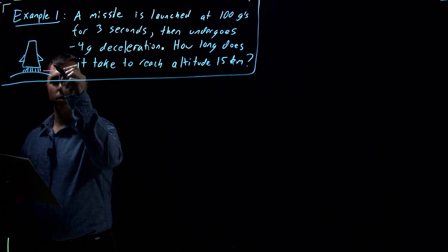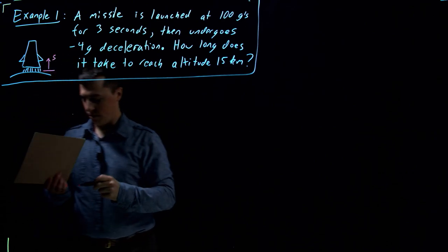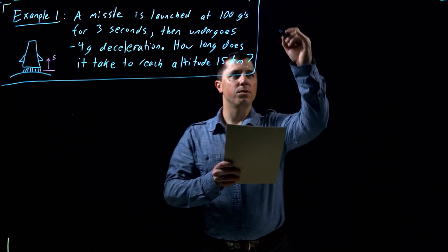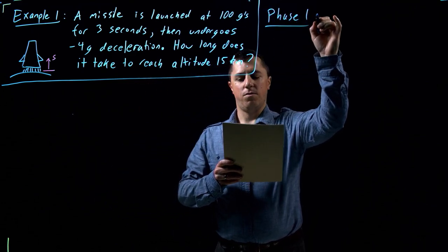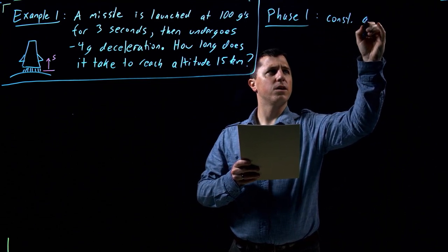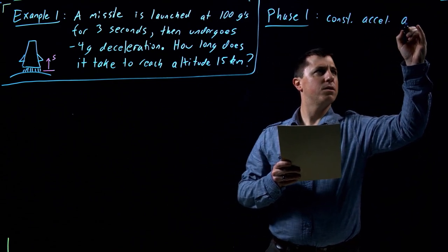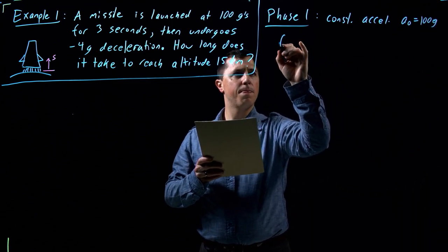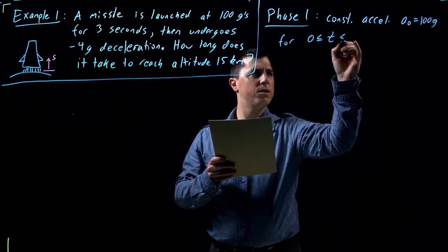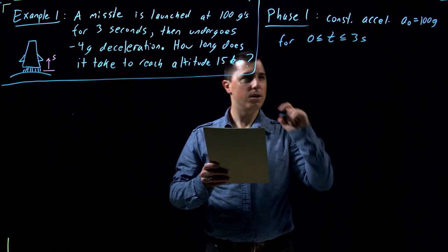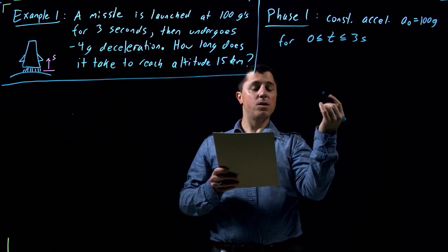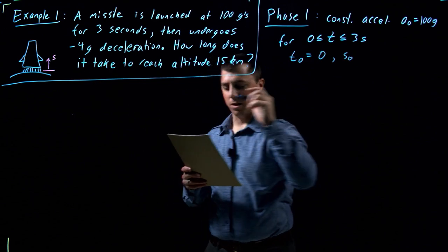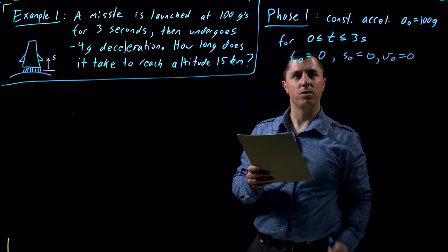Let's give this a coordinate, s, for our constant rectilinear motion. Let's break this down — phase one first. Phase one is a constant acceleration where a-naught is 100 times gravitational acceleration g, for the first three seconds, from zero to three seconds. Important quantities: we always need to know the initial values. Our initial time is zero, our initial position s is zero, and our initial velocity is zero — starting at rest.